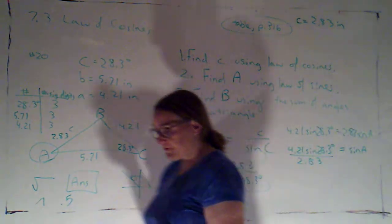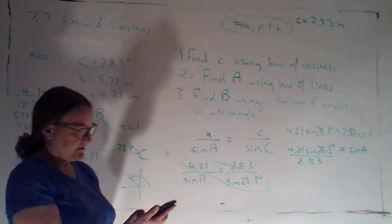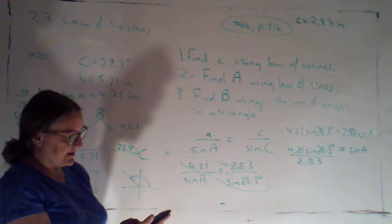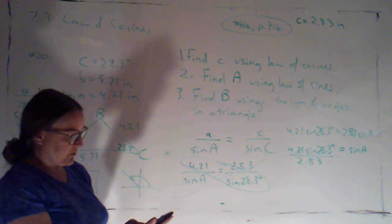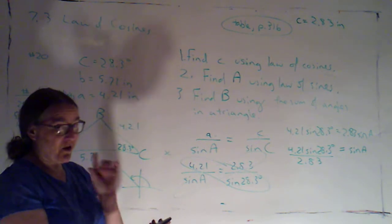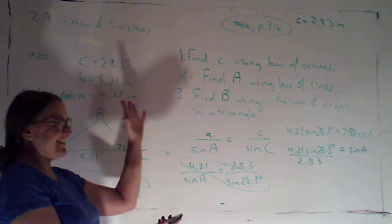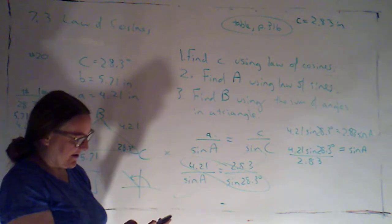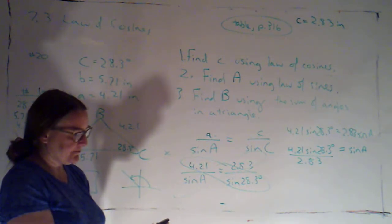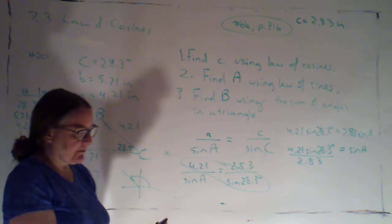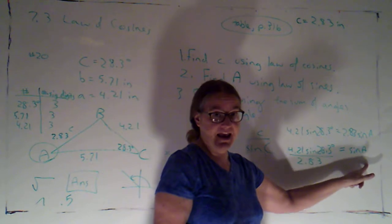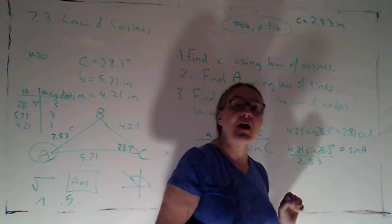So, I'm going to solve for sine, okay, so 4.21 times sine of 28.3, I know I'm still in degree mode, because I didn't change it after I did part one, and I made sure I was in degree mode then, divided by 2.83. Okay, so I've got 0.705 blah blah, but that's sine of A, I need to know A.